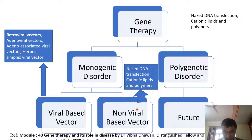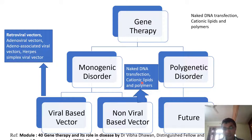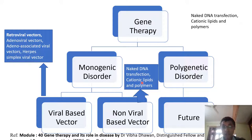The gene of interest can be directly delivered to the cell by two types: either the in vivo method or the ex vivo method. In the in vivo method, you can directly inject the DNA to the patient by intramuscular injection — you directly inject the DNA into the patient.